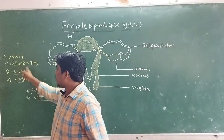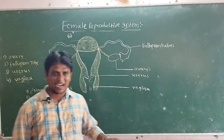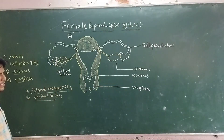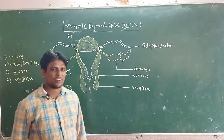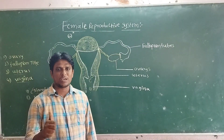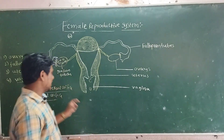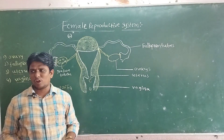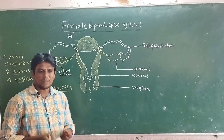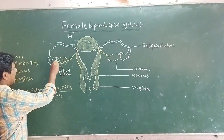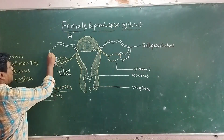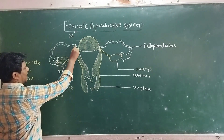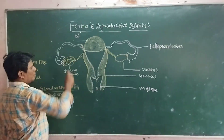Second, the Fallopian tube. The Fallopian tube is a funnel-shaped structure. The Fallopian tube receives the ovum and helps in the fertilization process.